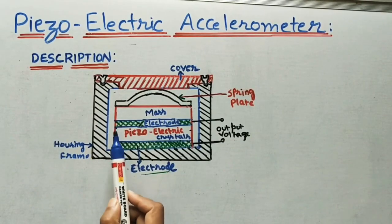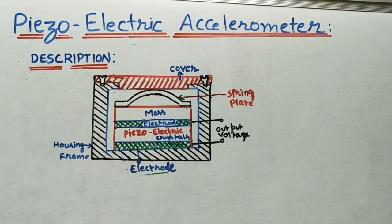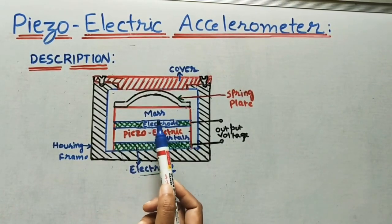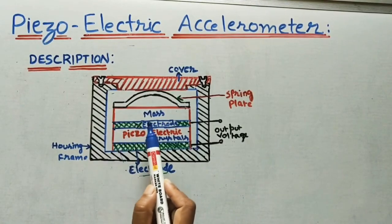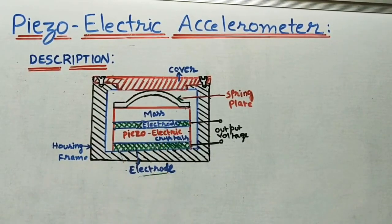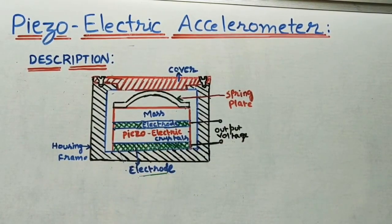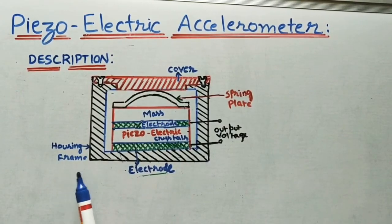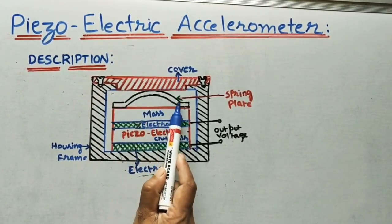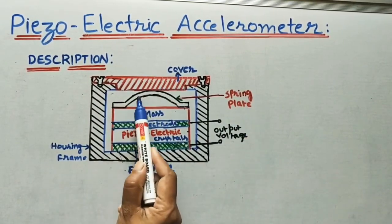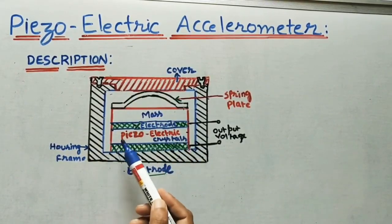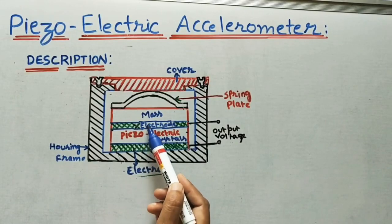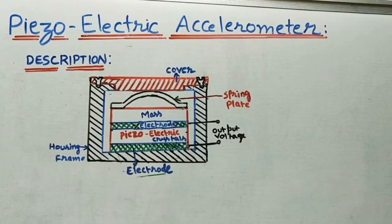The second part: some known value of mass — in grams or kilograms — is kept on the crystal-electrode arrangement. The third part: we are keeping one spring plate above the mass. This spring plate keeps the mass and the crystal-electrode arrangement together.